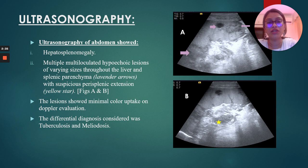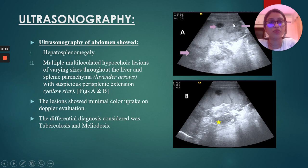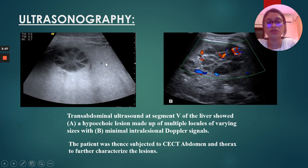Ultrasound of the abdomen revealed hepatosplenomegaly. Multiple multi-loculated hypoechoic lesions of varying sizes were scattered throughout the liver and splenic parenchyma. This image shows the spleen with definite splenomegaly and hypoechoic lesions scattered in both the upper and lower poles, with perisplenic extension into the gastrosplenic ligament. These lesions showed minimal color uptake on Doppler evaluation. Transabdominal ultrasound at segment 5 of the liver showed a hypoechoic lesion made up of multiple locules of varying sizes with minimal intralesional Doppler signals.